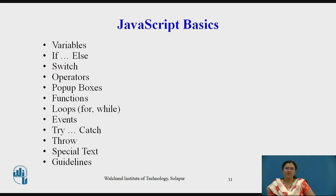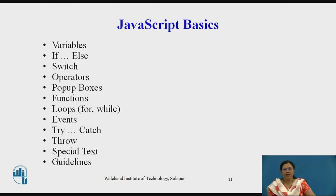JavaScript basics include: defining variables, if-else statements, switch cases, many operators, popup boxes, alert boxes, many built-in functions, loops such as for loop and while loop, different events, try-catch blocks, throwing exceptions, and special texts and guidelines. These are the basic features of JavaScript.